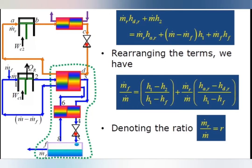Rearranging the expression to get the value for yield: M-dot-F / M-dot = (H_1 minus H_2) / (H_1 minus H_F) + (M-dot-R / M-dot) · (H_A minus H_D) / (H_1 minus H_F). This is the expression for yield in terms of enthalpy values and the mass flow rate of the refrigerant circulating through the pre-cooling cycle.